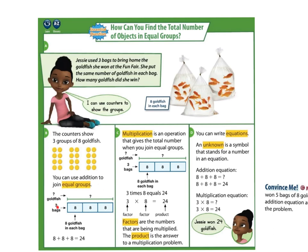We use a bar diagram to show you. The line shows us the total number, which is what we are trying to find. We know that there are 3 groups, represented by our 3 boxes, and there are 8 fish in each group. So this diagram shows us 8 plus 8 plus 8, and that equals 24.